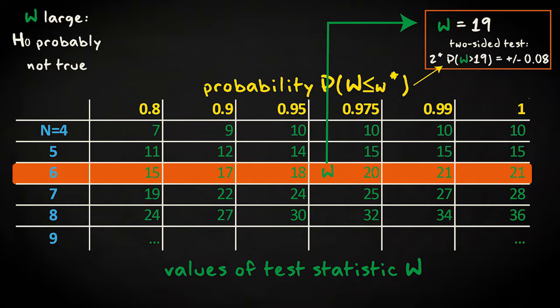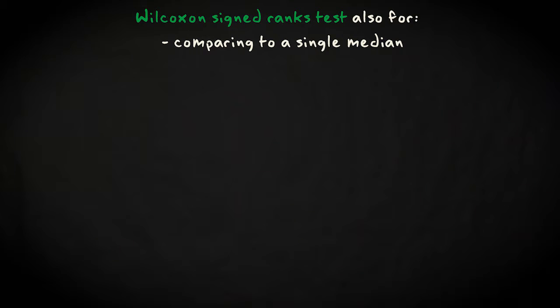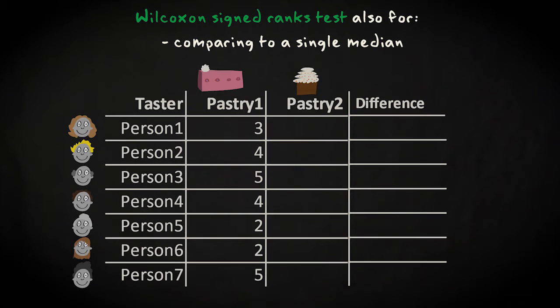The pastry tasting example has illustrated the signed ranks test for a case with paired data. But it can equally well be applied to a situation with a single sample where you compare scores to a theoretical median. You are then testing whether the observed median scores are different from what is expected. After replacing the values in this column with a theoretical median, all the calculations are the same.